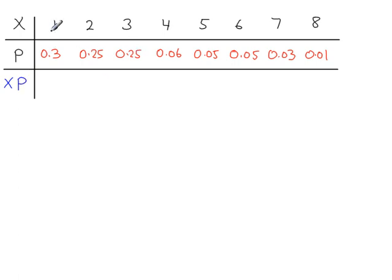So, for example, the first pair of values, X and P, if you do X times P, so 1 times 0.3, 0.3. 2 times 0.25, 0.5. 3 times 0.25, 0.75.